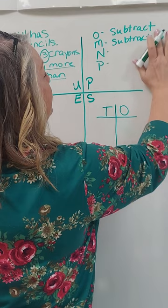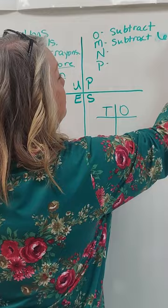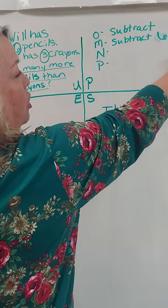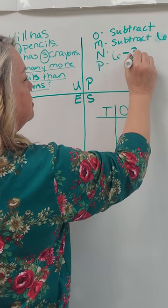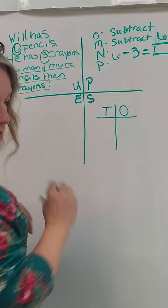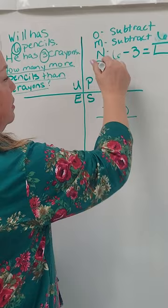Six minus three equals something here. Okay, that's going to be our difference because when we do a subtraction problem, the answer is called the difference. The N stands for number sentence. So my number sentence again is going to be six minus three equals the difference. And this is going to be what we are going to do to figure this out. The P stands for the process or the plan.